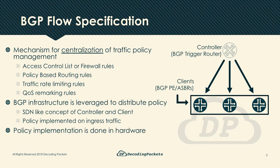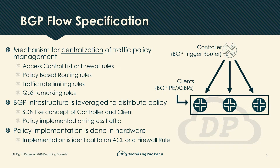One great thing about the solution is that it leverages the current policy implementation of the client devices' infrastructure. A Cisco IOS router will program the incoming flow spec policy directly into its TCAM, while a Junos router will translate the same policy into a firewall filter and apply it to its interfaces. This makes the solution as efficient as the client hardware allows, leveraging already developed technologies.